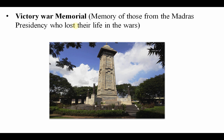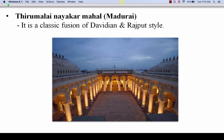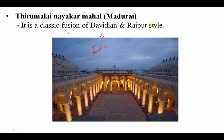Victory War Memorial was made in memory of those from the Madras Presidency who lost their lives in wars. It is known for the classic fusion of Dravidian and Rajput styles of architecture — Dravidian being the southern architectural style and Rajputana being the architectural style of Rajasthan.